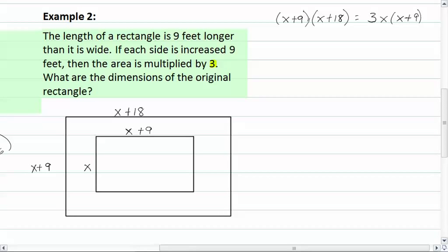That will give us x squared plus twenty-seven x plus one hundred and sixty-two equal to three x squared plus twenty-seven x.